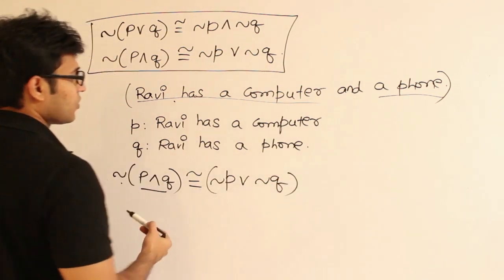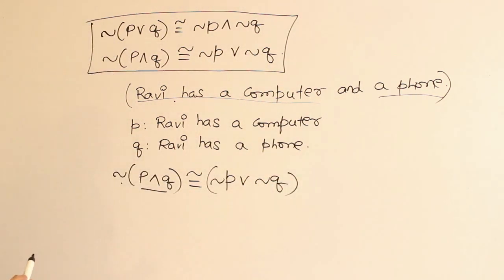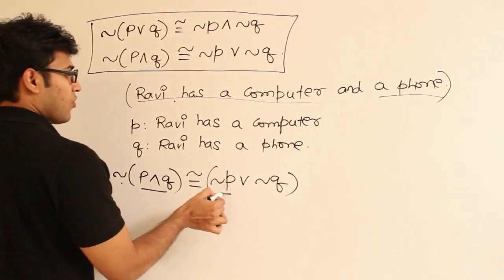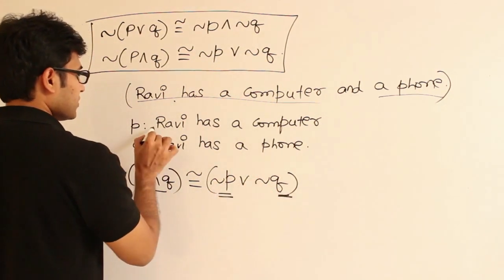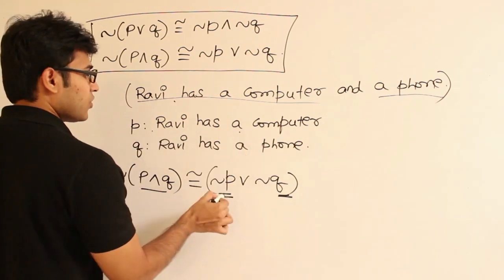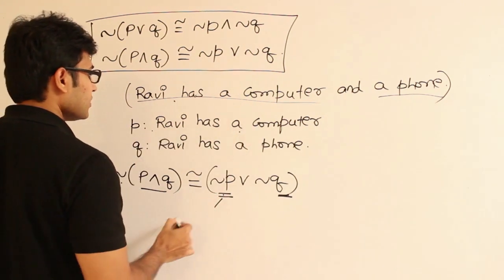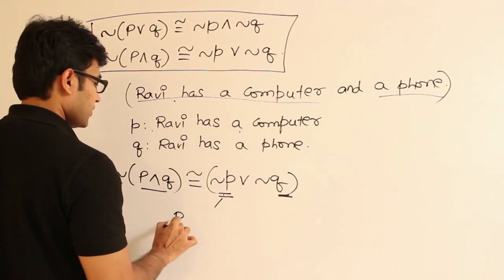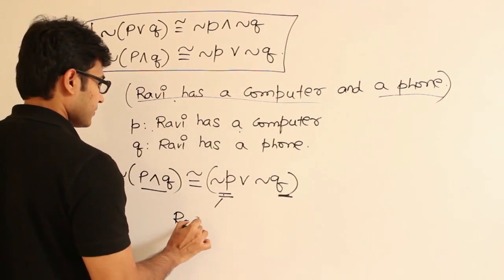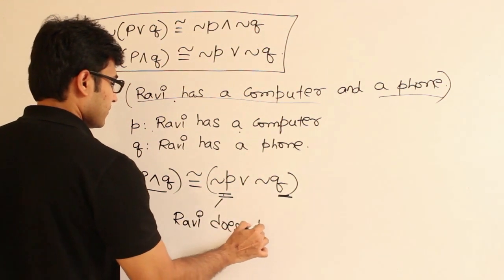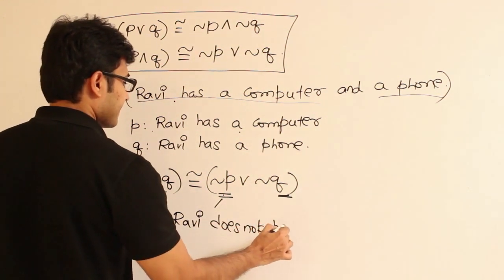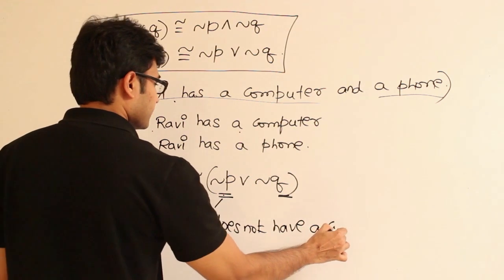This is what it is supposed to be equivalent to. And now, what is negation P? P is 'Ravi has a computer,' so negation P is 'Ravi does not have a computer.'